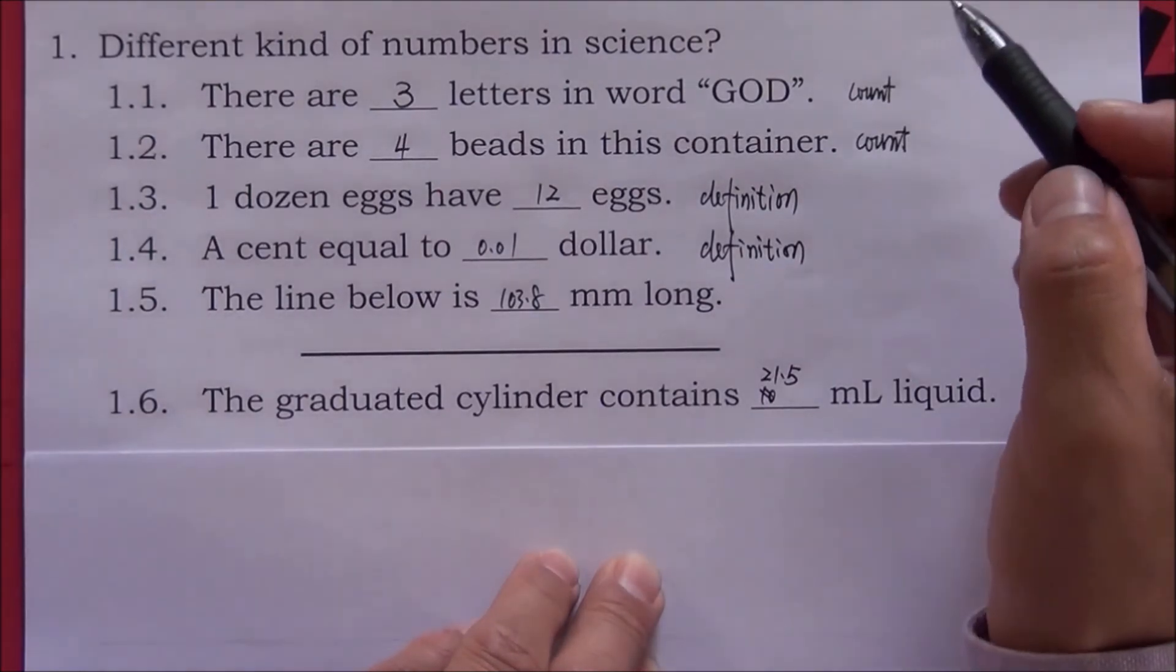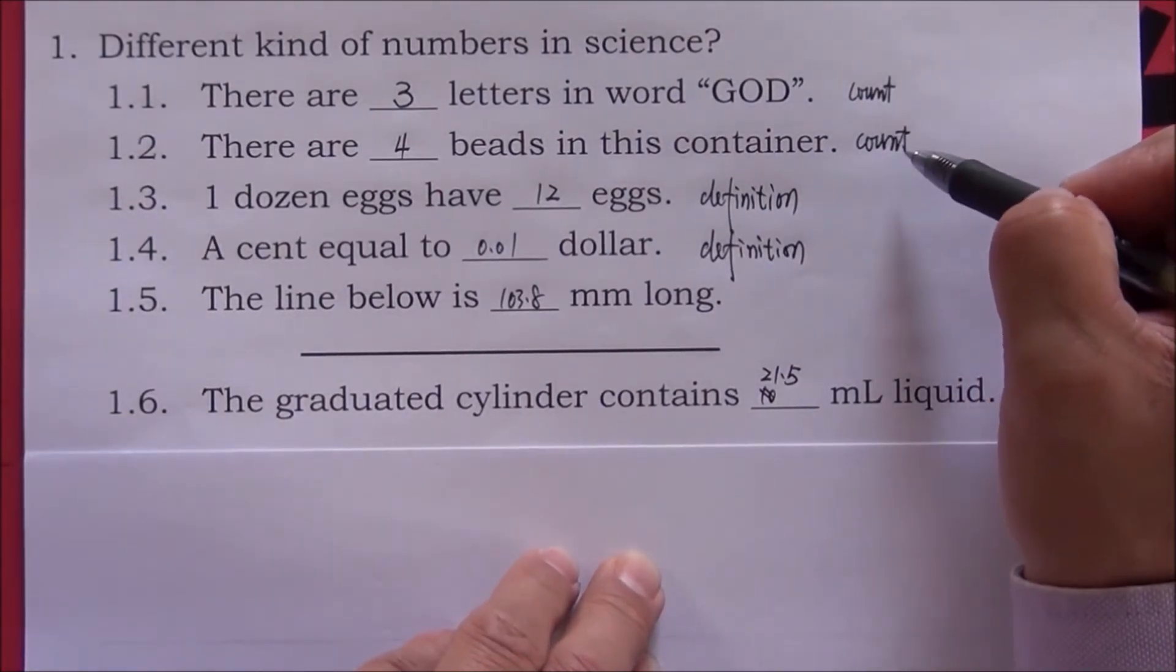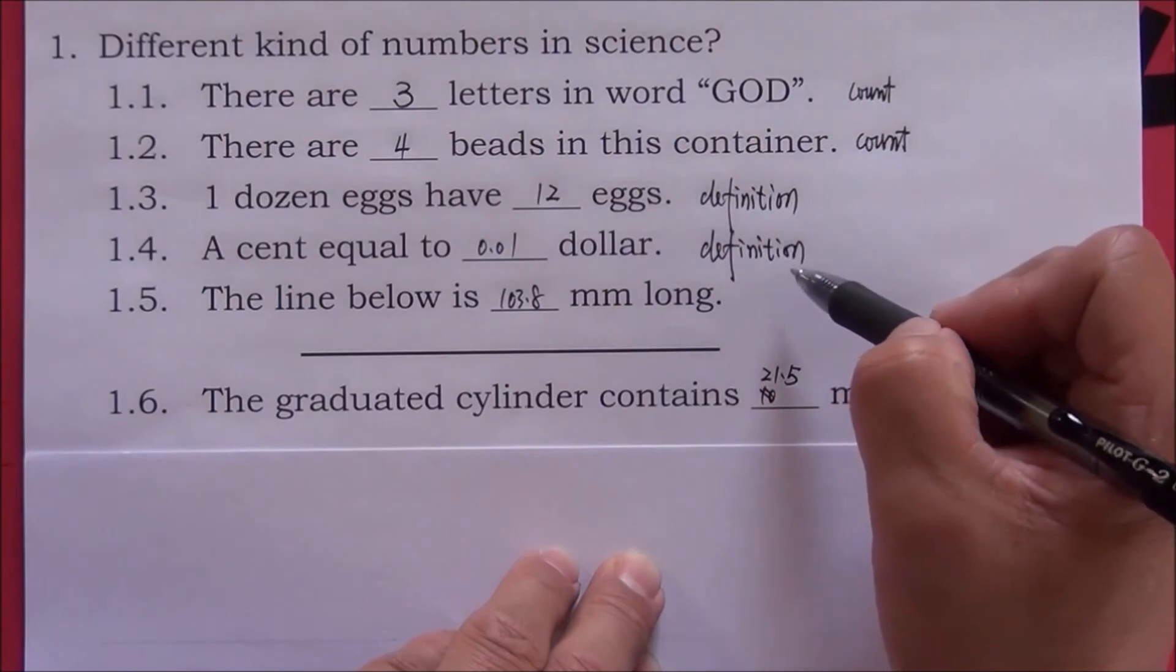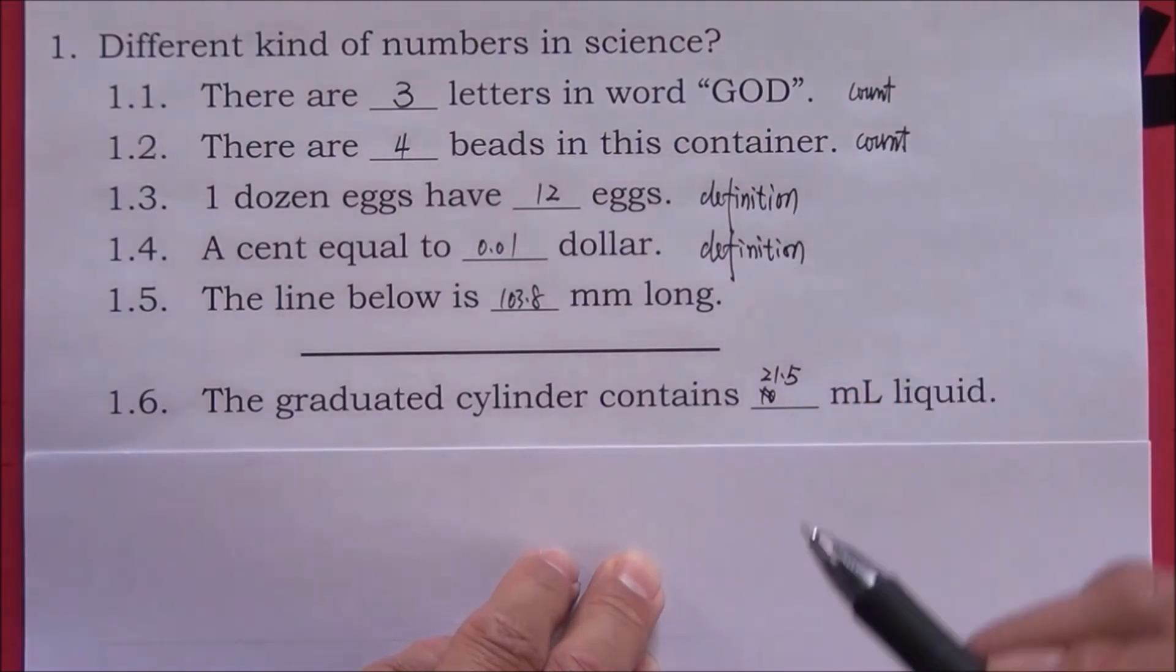Numbers from counting or from definition are exact. They do not have error, or we say they do not have uncertainty.